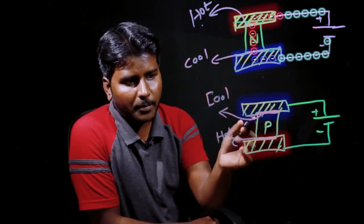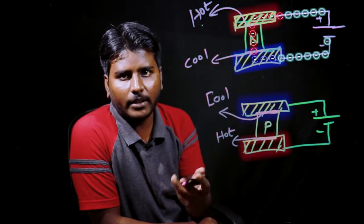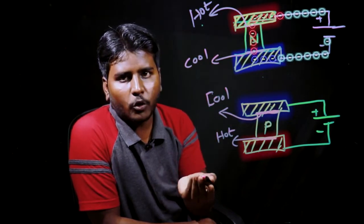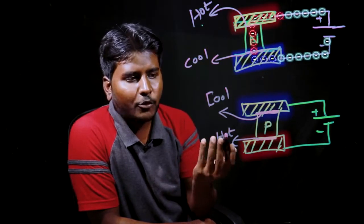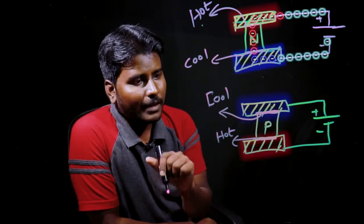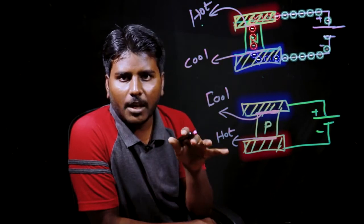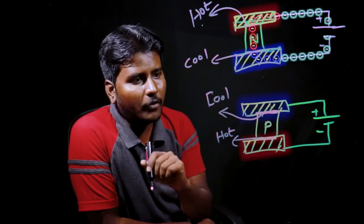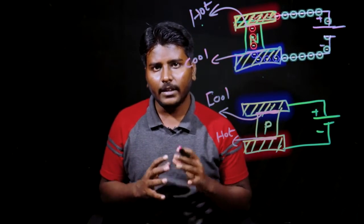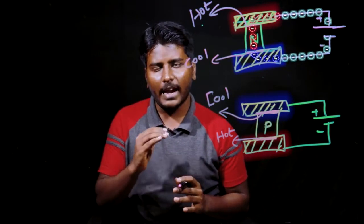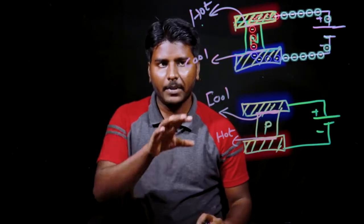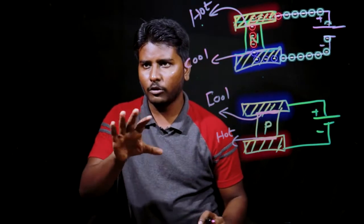Moreover, one Peltier pellet operates at less than 100 mV and can consume 5 to 6 amps. So if you go to a configuration, we can do any of this. The sub-atomic physics is a bit complex, but we can analyze this at a high level abstraction. In this P and N type material, we can arrange a particular configuration.